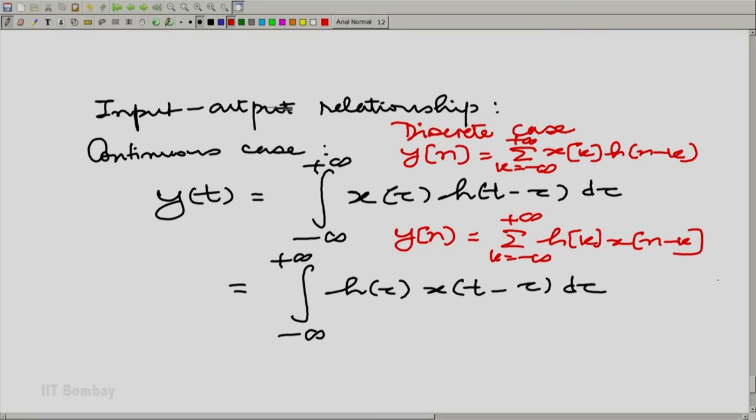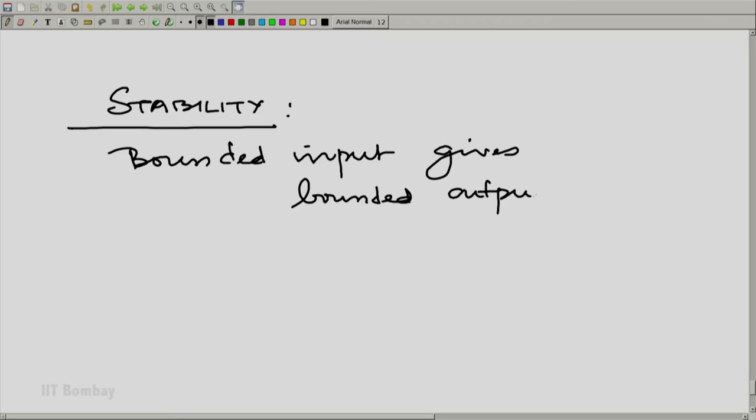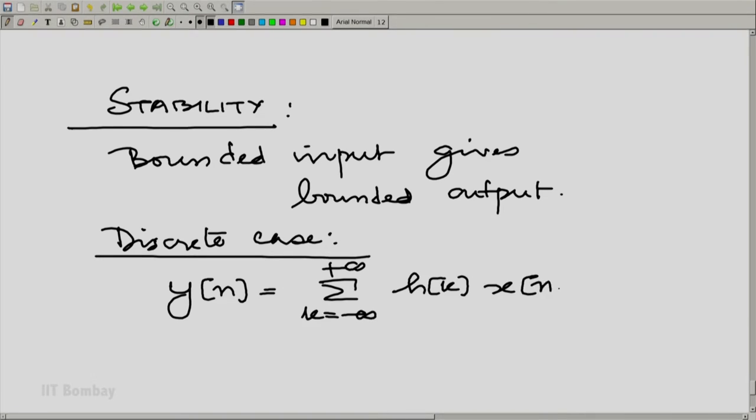What does stability mean? Let us look at the definition of stability first. Stability means a bounded input gives a bounded output. Let us look at the discrete case first. As usual, that is easier to handle. This expression is easier. And I am ultimately interested in mod y(n) to study the bound of the output.